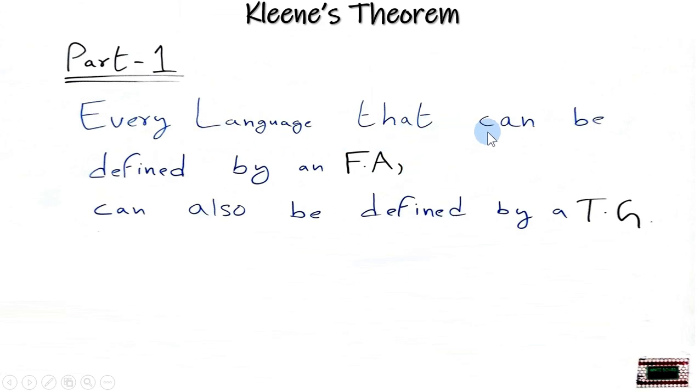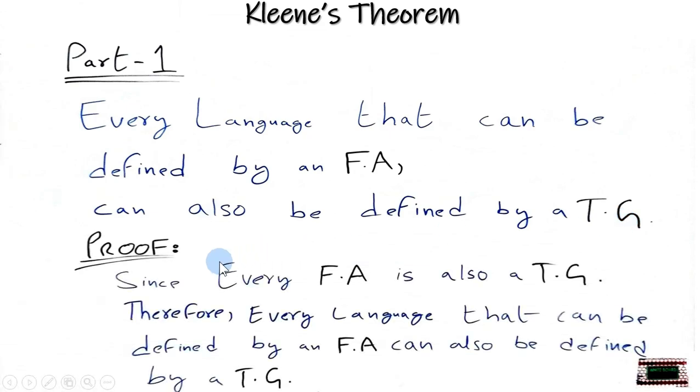Every language that can be defined by an FA can also be defined by a TG. Now to prove that we will give a theoretical proof which is: since every FA is also a TG, therefore every language that can be defined by an FA can also be defined by a TG. So in the proof we are basically saying that every FA is also considered as a TG.